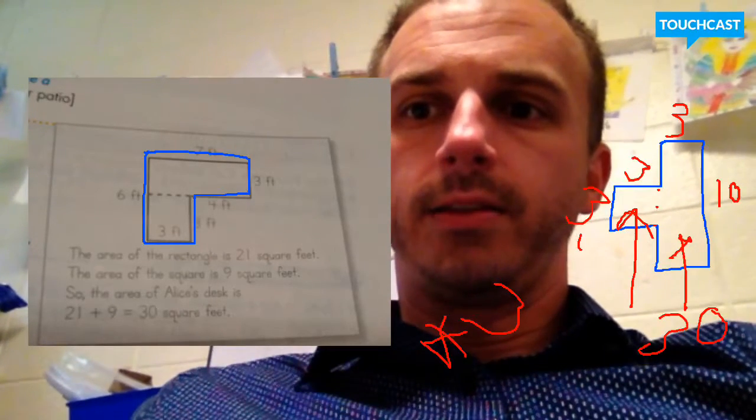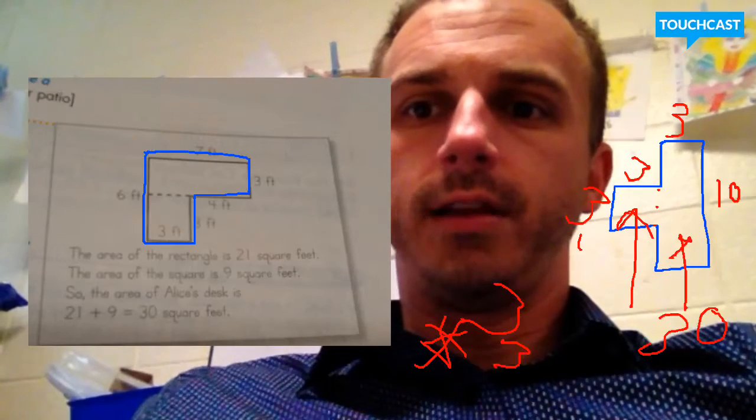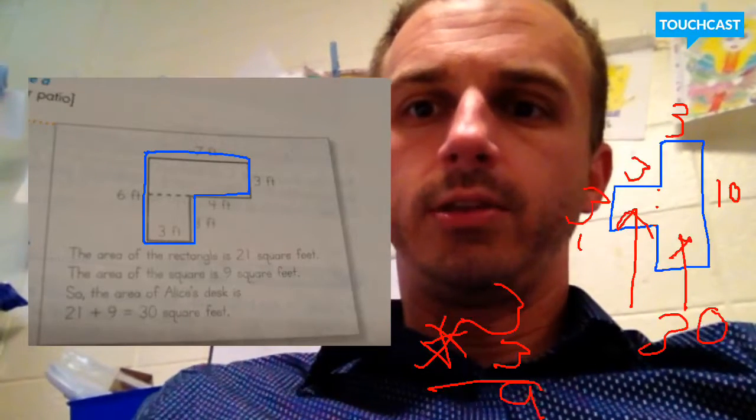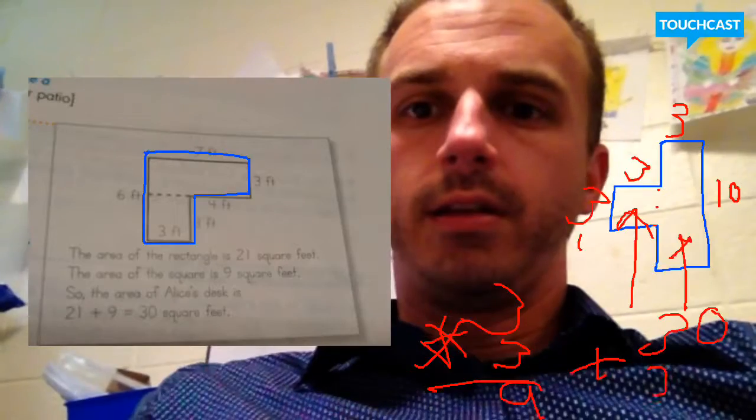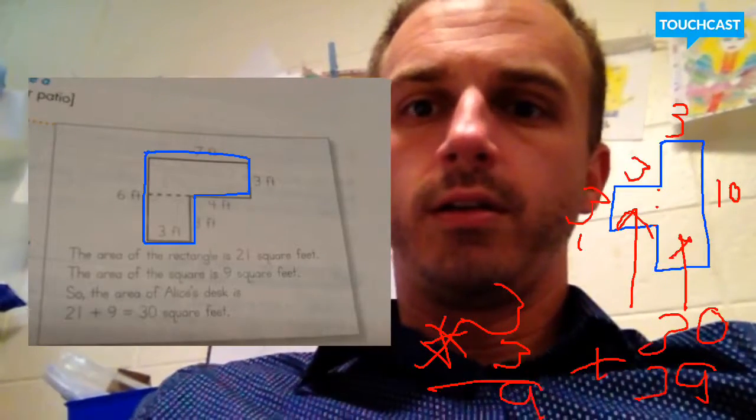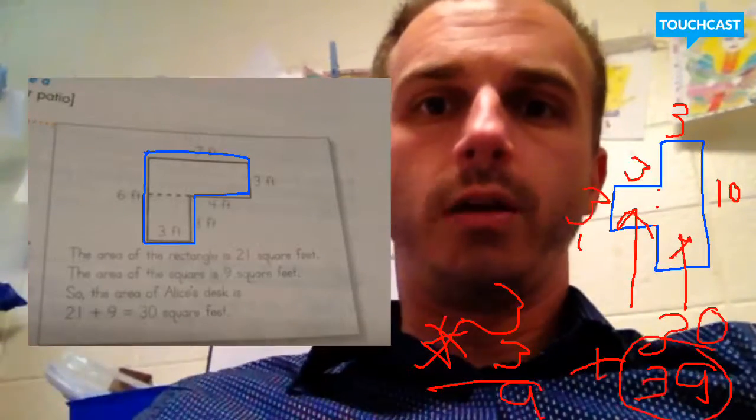That one was 3. That would be 3 times, that's an ugly x, 3 times 3 would be 9. And I'll just add those two together, giving me a square unit total of 39 square units.